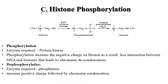Histone phosphorylation adds negative charges to histones, reducing interaction between DNA and histones and promoting chromatin condensation. It is mainly involved in the activation or inactivation of particular proteins.